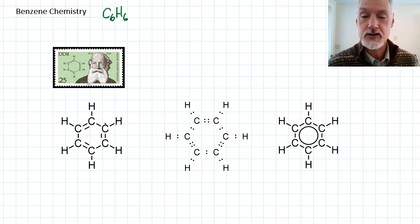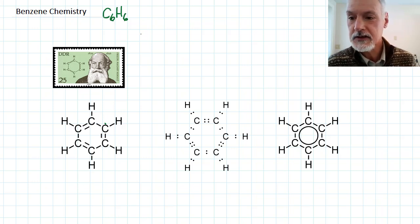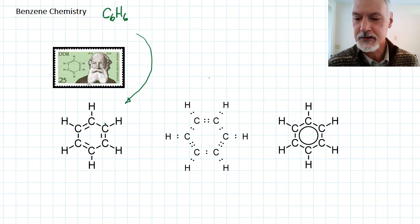You could draw it as a cyclic structure, a linear structure, or even a cyclic structure with branches. However, Frederick Kekule came up with this idea for what the benzene molecule looks like. It's a six-membered ring with alternating double bonds in it.